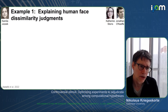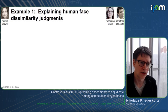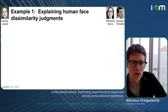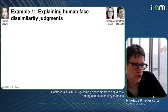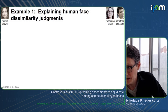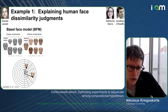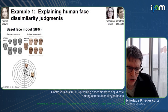To motivate this, I want to give two examples from my lab where we did not use controversial stimuli, illustrating the limits of using random or natural stimulus selections. In the first example, we were interested in explaining human face dissimilarity judgments. Camilla Jotswijk, Katherine Storrs, and Jonathan O'Keefe conducted an experiment showing faces generated with the Basel face space model, a face graphics model.